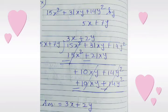Next: 15x squared plus 31xy plus 14y squared divided by 5x plus 7y. We multiply with 3x and get 15x squared plus 21xy. After changing the sign, the first term is cancelled, and after solving the second term we get plus 10xy plus 14y squared.